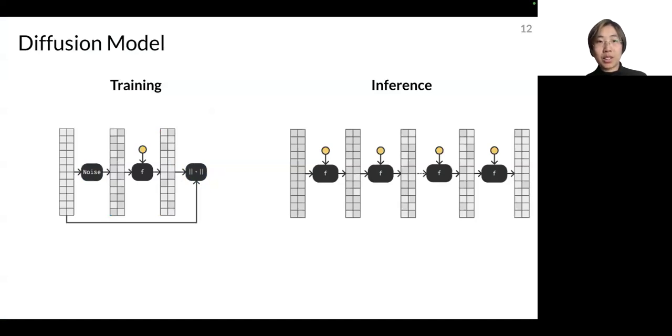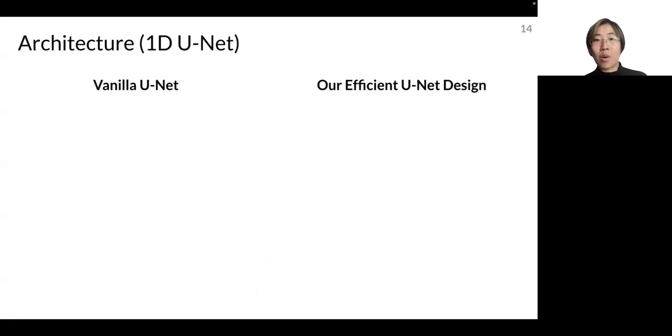So a normal diffusion model consists of its training procedure and inference procedure. In the training, it's mainly like given a music sample or given a sample of whatever modality and try to reconstruct it. In the inference case, it tries to directly generate and output clean music in our case. So the type of diffusion that we use is the V diffusion, where V stands for velocity.